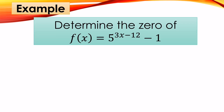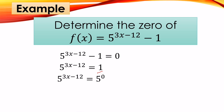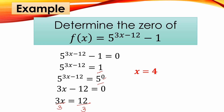Another example: determine the zero of f(x) = 5 raised to (3x minus 12) minus 1. Equate f(x) to zero, then move negative 1 to the other side so it becomes positive 1. Find the common base between 5 and 1, which is 5, since any base with exponent zero equals 1. Equate the exponents: 3x minus 12 equals zero, so 3x equals 12, and dividing both sides by 3 gives x equals 4. The zero is x = 4.